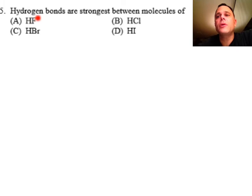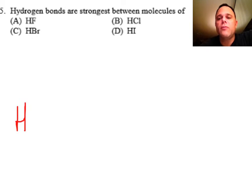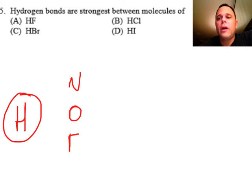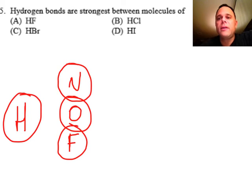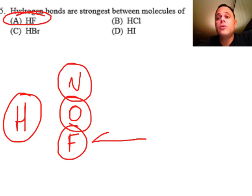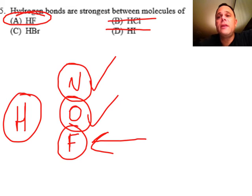Question five: hydrogen bonds are strongest between molecules of which compound? We know hydrogen bonds can happen between the hydrogen of one molecule and the N, O, or F of another. Looking at the choices, choice A — hydrogen fluoride — contains hydrogen bonded to fluorine, which is one of those elements. None of the other choices will form hydrogen bonds, so the answer is A.